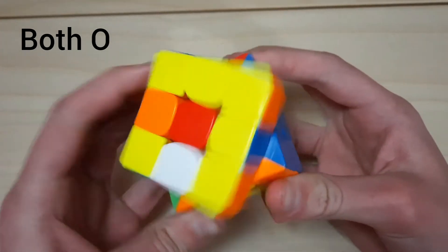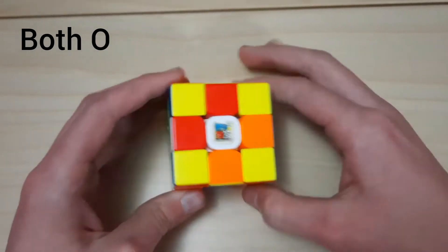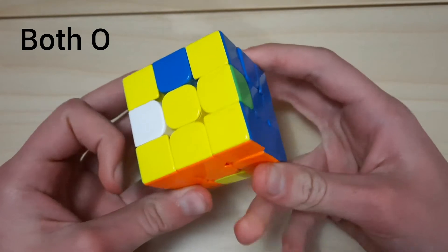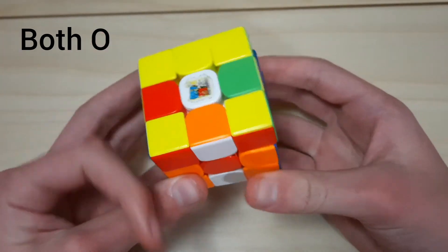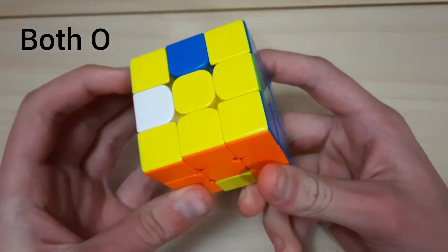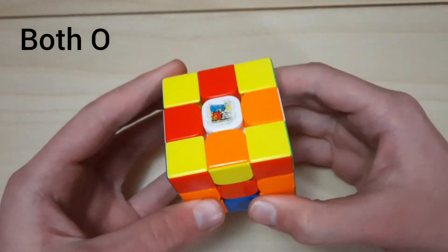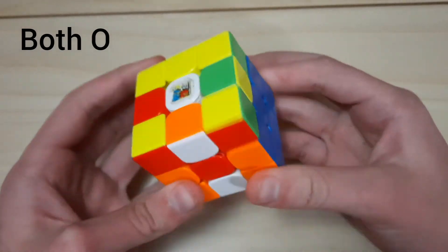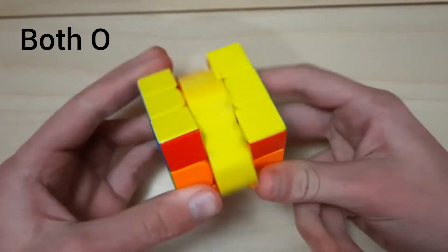A good way to remember this is that you do M'U', M'U', M'U', M'U'. It's the same thing, just with opposite M slices. That's a good way to remember it. And then that gets you to the good arrow. Obviously, you continue from there.